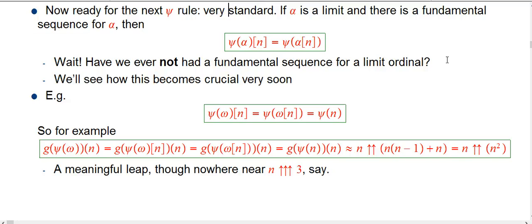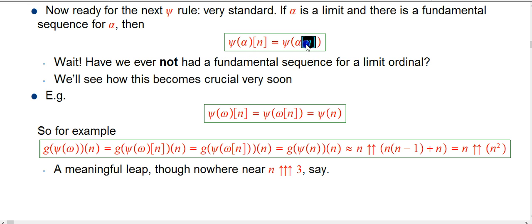So now we're going to go to the next rule for psi. It's a very standard rule. If alpha is a limit ordinal and there's a fundamental sequence for alpha, then I'd like to create psi of alpha — but really what I want to create is the fundamental sequence for psi of alpha. To get the nth term of the fundamental sequence for psi of alpha, you just take the nth term of the fundamental sequence for alpha and apply psi to it.